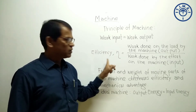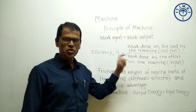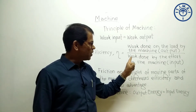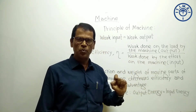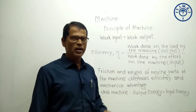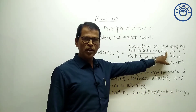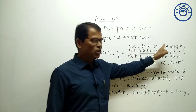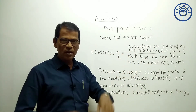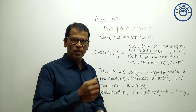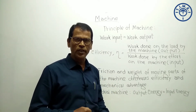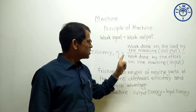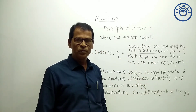The efficiency of the machine, denoted by eta (η), is the ratio of work done on the load by the machine — the work output — divided by work done by the effort on the machine — the work input. Whenever you see the word efficiency, remember it is always output upon input: output energy upon input energy, output work upon input work. In the case of a machine, the work done on the load is work output, and the effort applied — for example, effort applied on the rope of the pulley or on the pedal of the cycle — is the work input.